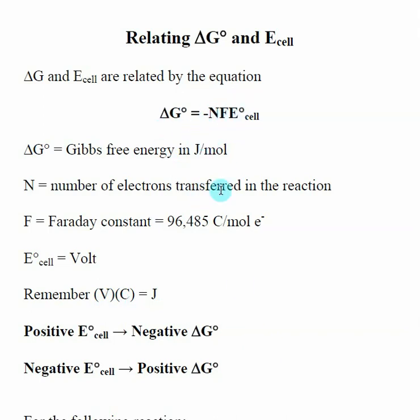So when you look at this, the equation is pretty straightforward. When we're using electrochemical cells, in order for electrons to flow, we needed to have a positive E cell.